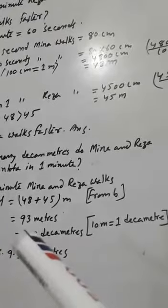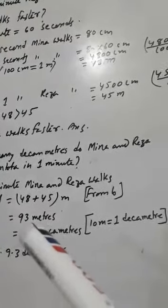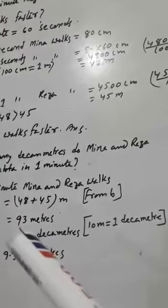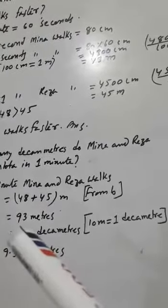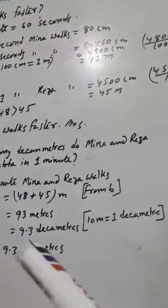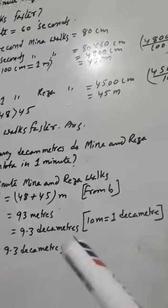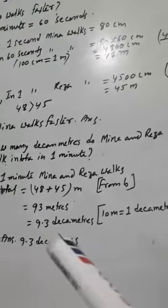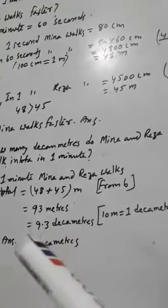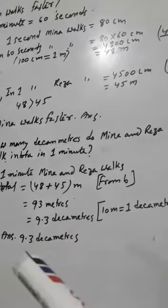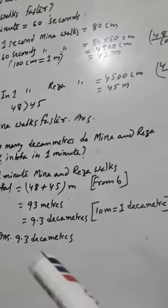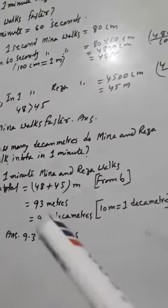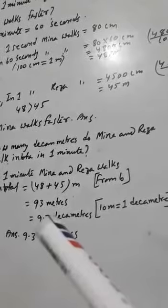If we divide 93 by 10, the decimal point moves 1 digit to the left, giving 9.3 decametres. Together, both work 9.3 decametres or 93 meters in 1 minute.